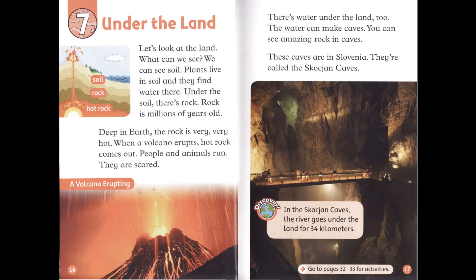Chapter 7: Under the Land. Let's look at the land. What can we see? We can see soil. Plants live in soil and they find water there. Under the soil, there's rock. Rock is millions of years old. Deep in Earth, the rock is very, very hot. When a volcano erupts, hot rock comes out. People and animals run — they are scared.